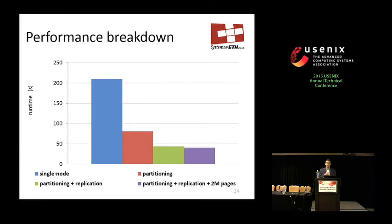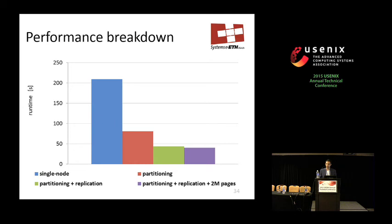Let's break down where Shoal's performance improvement comes from, compared to single-node allocation. Using partitioning alone gives approximately two-thirds improvement by spreading memory and avoiding memory controller load imbalance. Adding replication localizes memory accesses so every core can access the working set directly without going via the interconnect, reducing congestion. Using superpages gives another 20%.